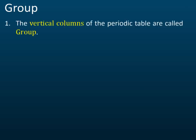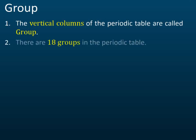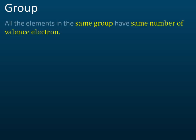The vertical column in the periodic table is called a group, and there are 18 groups. All the elements in the same group have the same number of valence electrons.